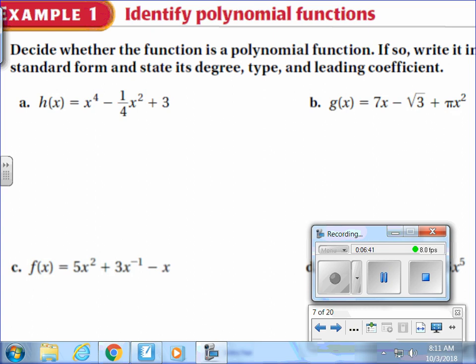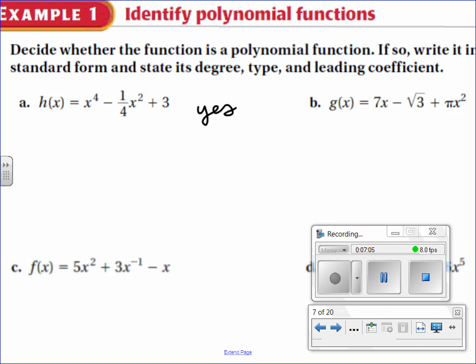So we're going to say yes or no whether it's a polynomial. If so, write it in standard form and state the degree, type, and leading coefficient. First things first, I'm going to see if part a here follows the rules. Are all exponents whole numbers? Four and two, yes. Are all coefficients real numbers? There's a one, there's a negative one-fourth, there's a three, so yes. This is definitely a polynomial function. I've got good news - it's already in standard form. They have the biggest exponent first, the second biggest next, and then this one doesn't have an exponent or variable. So the degree is the highest exponent, so this would be degree four. Since it's degree four, we call it a quartic - that's its type. And the leading coefficient is the number out front, it's actually an invisible one. So the leading coefficient is one.